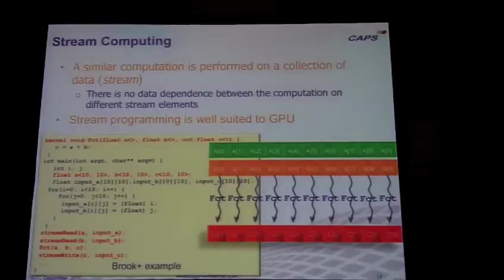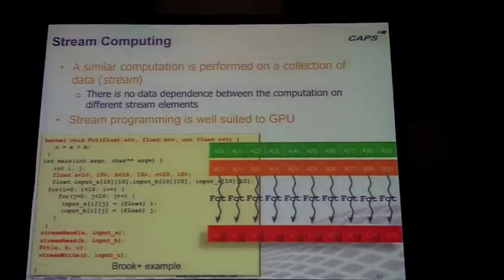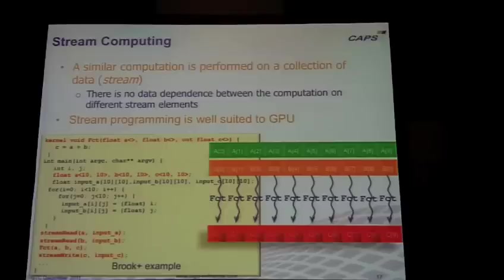Data parallelism — stream parallelism — in its simplest form is: you have a lot of data and you want to apply the same function to all the data. This gives you massive parallelism, because when you have a lot of data, you have massive parallelism. That also means when you have a small amount of data, you don't scale. This is really well suited for GPUs, but also for manycore in general.